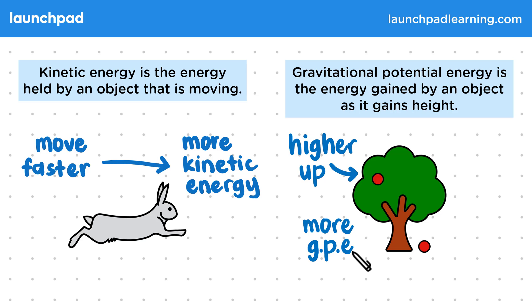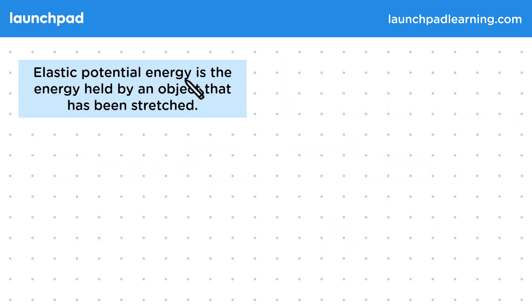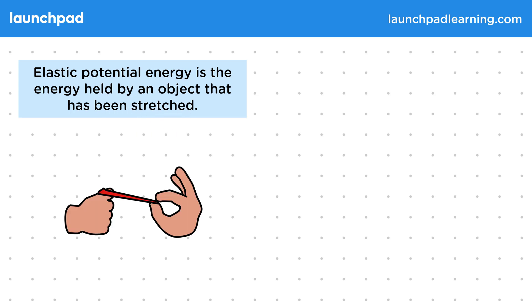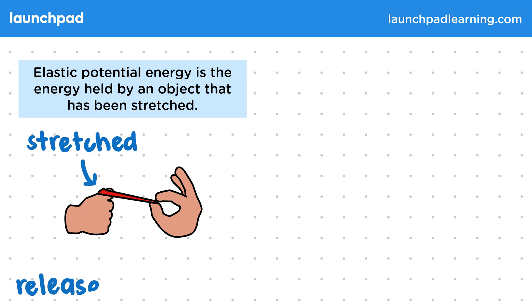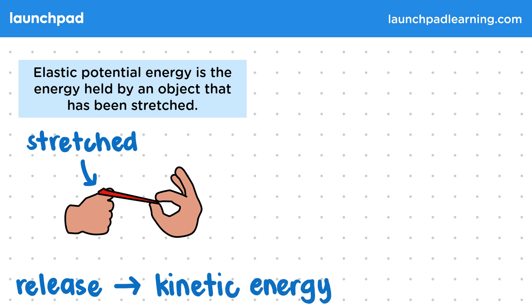Normally this energy will be transferred to kinetic energy as an object falls, which is what would have happened to the other apple. Elastic potential energy is the energy held by an object that has been stretched. We see this kind of energy in things like elastic bands. When the band is stretched, elastic potential is being stored in it, and if we were to release the band, all this elastic potential would suddenly change to kinetic energy that makes the band fly off. We'll learn more about this when we look at stretching objects in general.